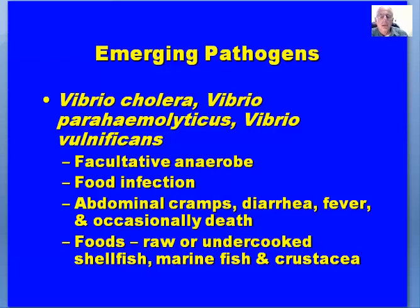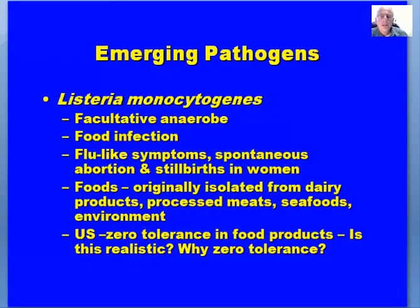The major foods associated are raw or under-processed shellfish, marine fish, and crustacea. Those of us who consume sushi or sashimi always have the potential for Vibrio species, particularly parahaemolyticus and vulnificus. Interestingly, the death rate for vulnificus is higher in men than in women.